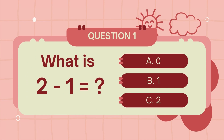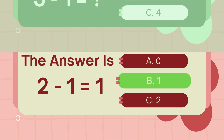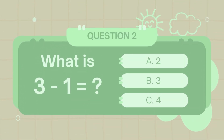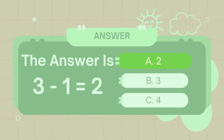What is 2 minus 1? The answer is 1. What is 3 minus 1? The answer is 2.